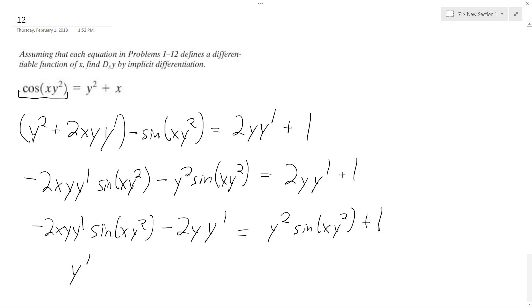Alright, so finally I get y prime is going to be equal to - or dy/dx - is equal to y squared, sine of xy squared, plus 1, all over... I can put the negative in front, but I'll just keep it on the bottom, so negative 2xy sine of xy squared, minus 2y.